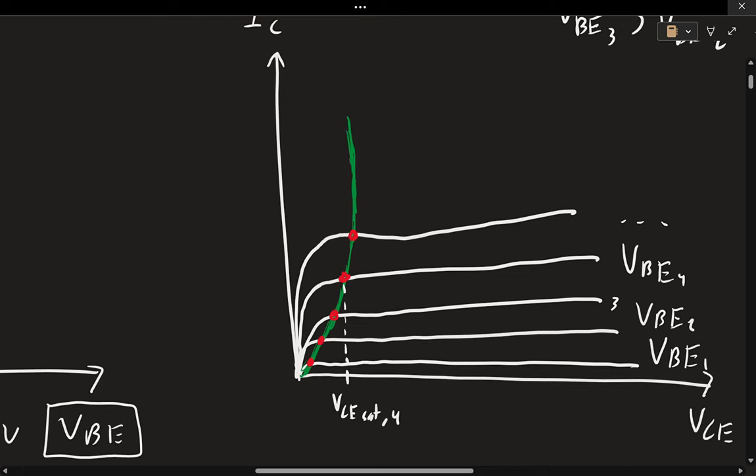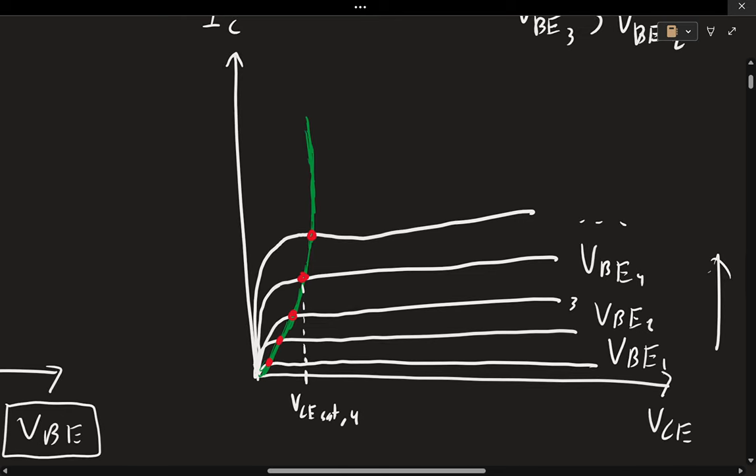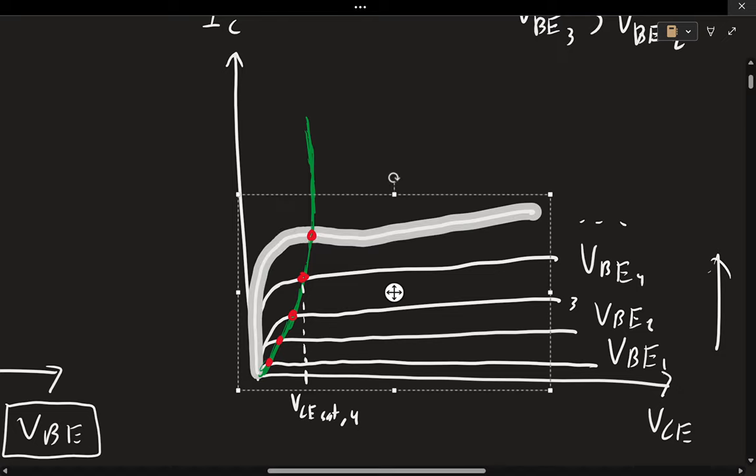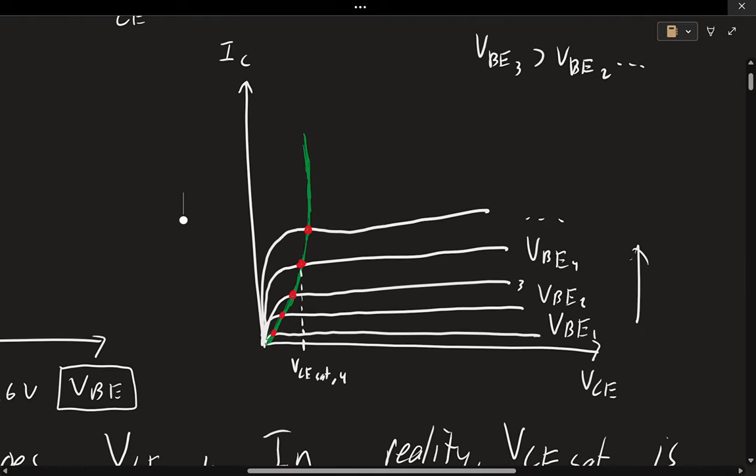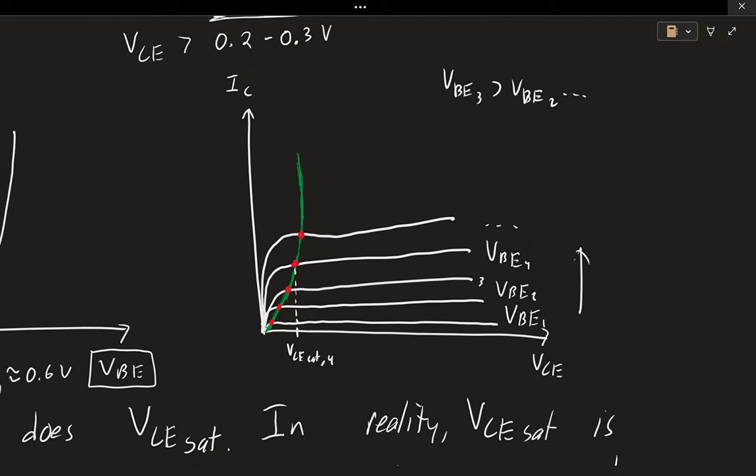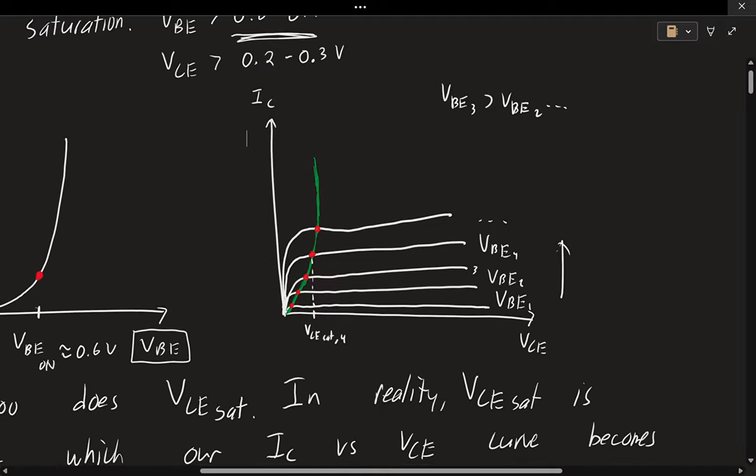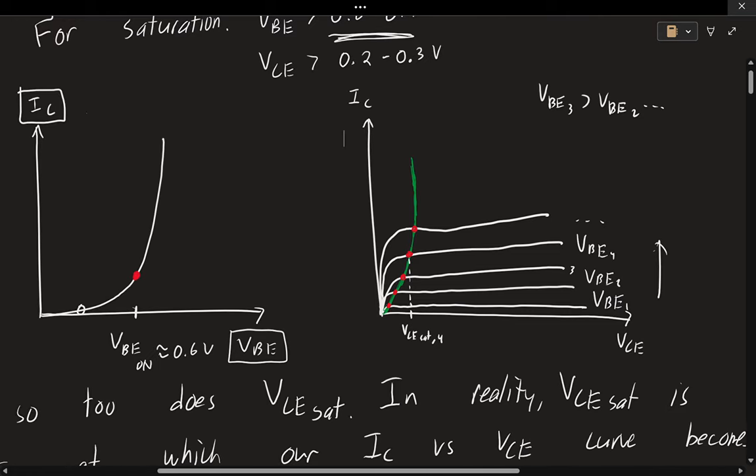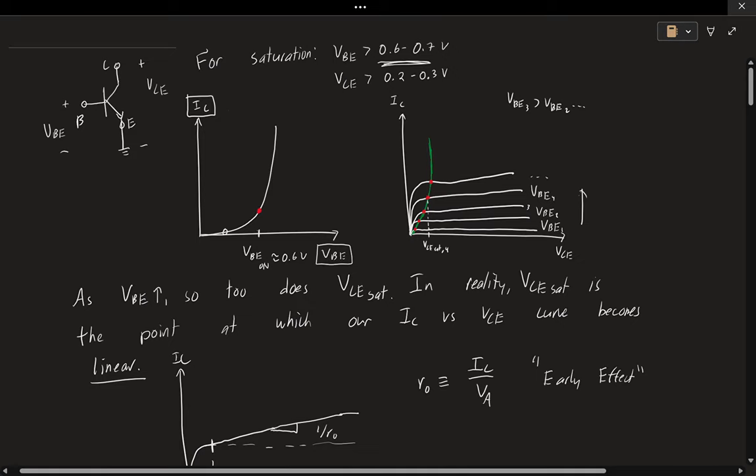So once we get past our VCE sat point we can see that our IC starts to flatten out. In other words it loses its dependence upon VCE. So the slope here pretty much be zero. Another thing we notice is that as we increase VBE we need a larger VCE before we go flat. So that's what these red dots are. These red dots are where for a certain VBE where does our IC versus VCE curve collapse such that we don't longer have a dependence on the collector voltage. So we can see that this kind of these red dots which is where it becomes flat mimic this exponential curve here. And in fact it's just the overlay of these two is where you find these VCE sat points. In reality VCE sat is the point at which our IC versus VCE curve becomes linear. So this whole time we've been saying hey it's going to be flat. But we say it's going to be linear now.